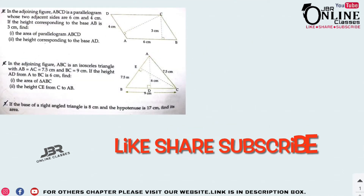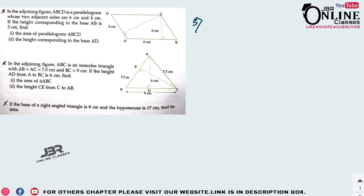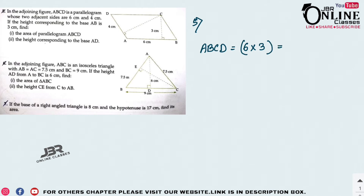Sum number 5: in the adjoining figure, ABCD is a parallelogram whose two adjacent sides are 6 cm and 4 cm. The height corresponding to base AB = 3 cm. Area of parallelogram ABCD = base × height = 6 × 3 = 18 cm².